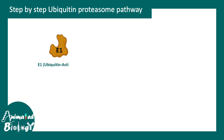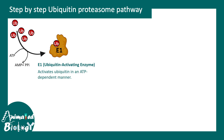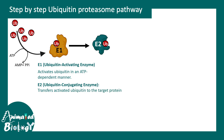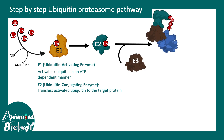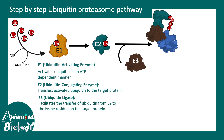First, the E1 enzyme — the ubiquitin activating enzyme — activates ubiquitin in an ATP-dependent manner. Then there is E2, the ubiquitin conjugating enzyme, which transfers ubiquitin residues to a target protein with the help of E3. E3, the ubiquitin ligase, coordinates with the target protein while E2 transfers ubiquitin onto the target protein, flagging it for destruction.